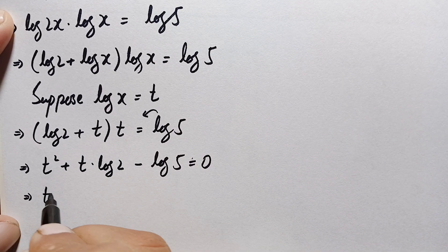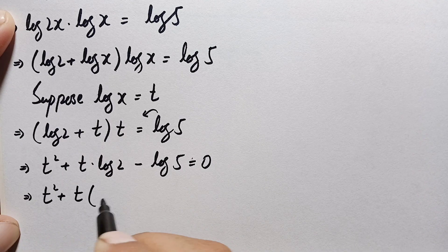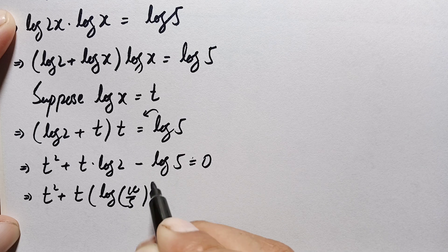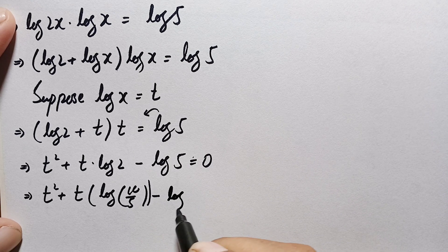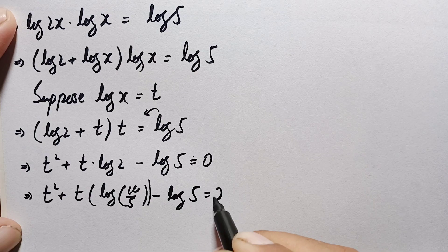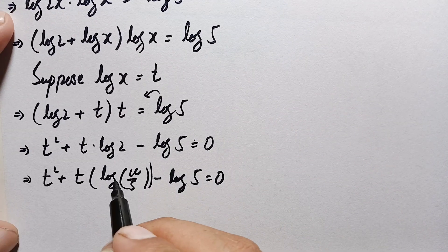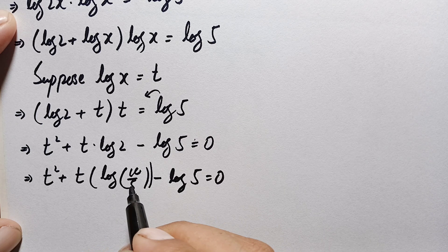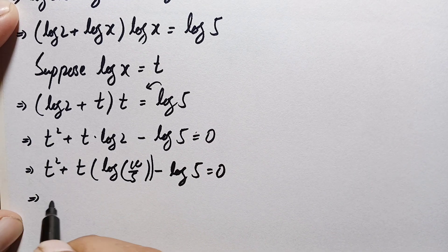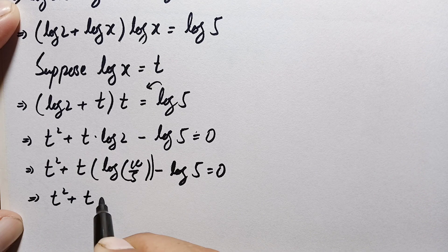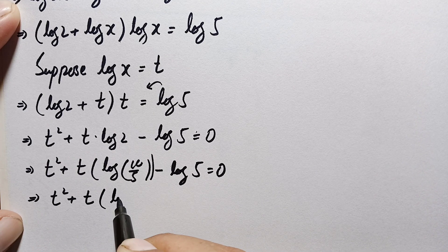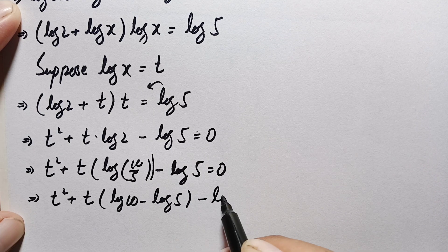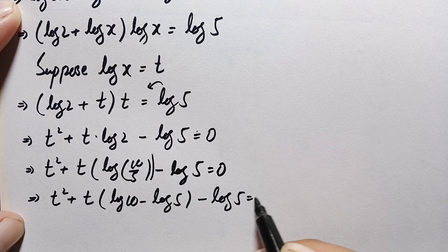This becomes: t squared plus t times log(10/5) minus log 5 equals 0. Using the logarithm identity log(a/b) = log a − log b, this expression becomes t squared plus t times (log 10 − log 5) minus log 5 equals 0.